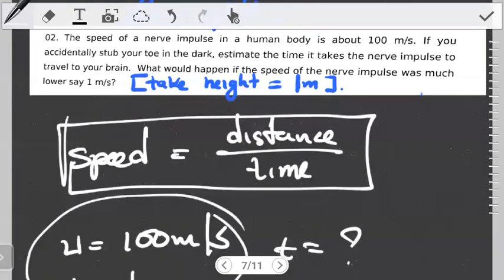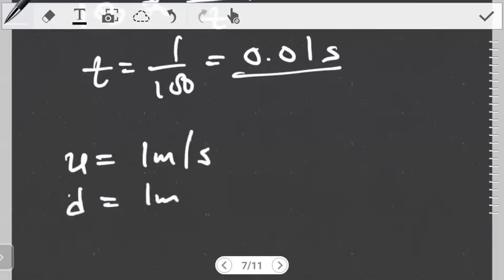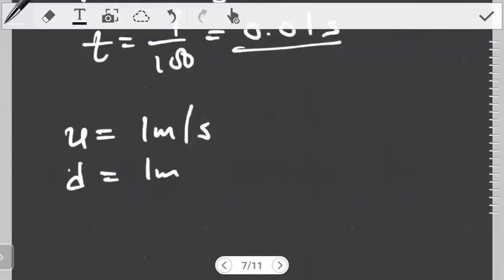What if the speed was much lower, one meter per second? What would happen? Let's take the same person whose height is one meter. And again, we're saying we want to know how long the impulse would move.